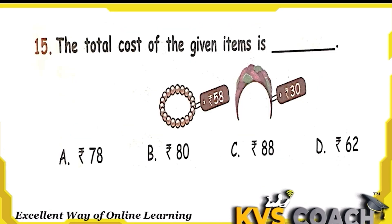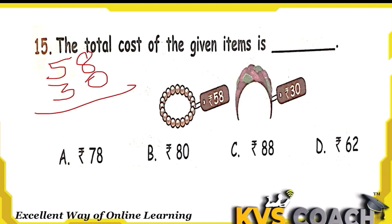The next question: find the total cost of the given items — a 58 rupees bangle and a 30 rupees hairband. Total means we add both: 8 plus 0 is 8, and 5 plus 3 is 8. So 88 rupees is the right answer.